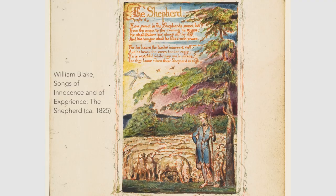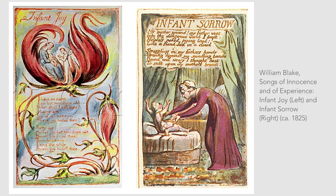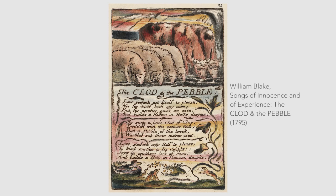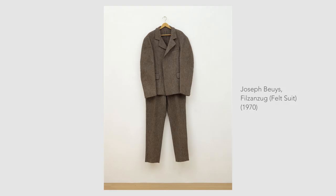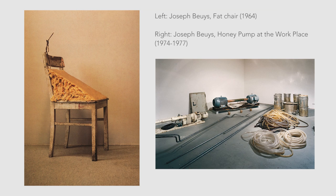Iconography can also be very personal. 18th century poet and painter William Blake invented a complex personal iconography to illustrate his vision of man and God. The iconography of Pablo Picasso is mostly autobiographical, and Joseph Beuys developed an iconography of substances such as felt, fat, and honey to express his ideas about life and society.